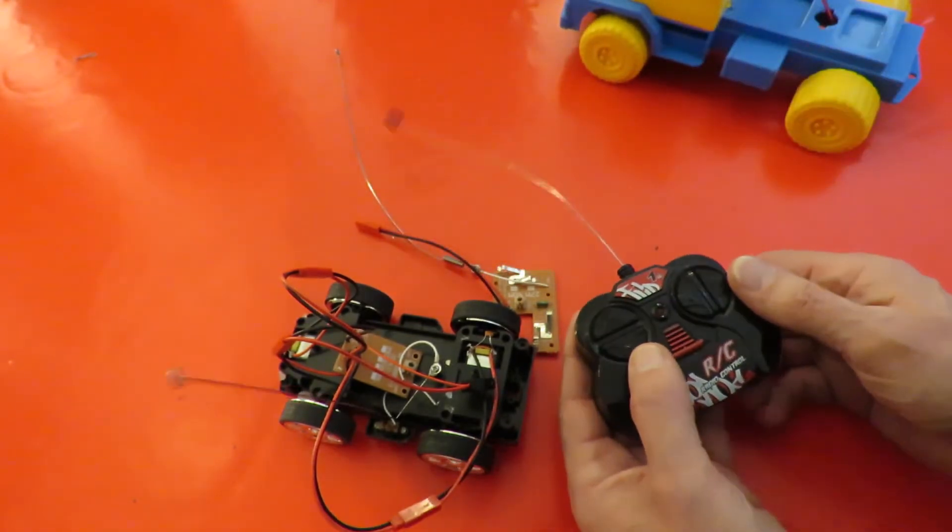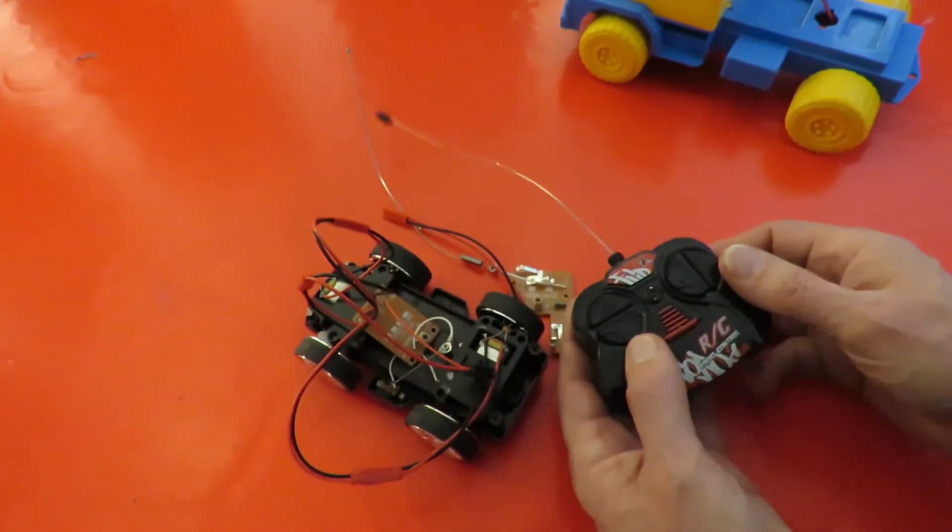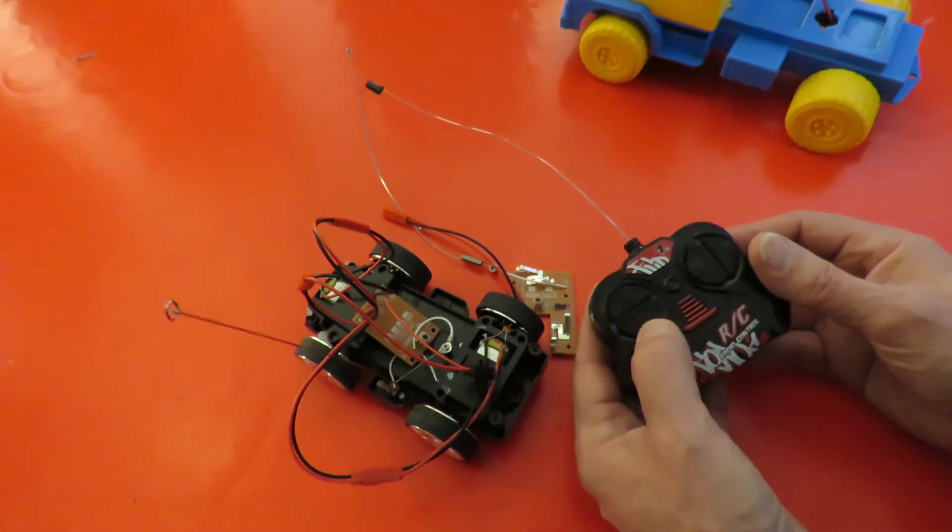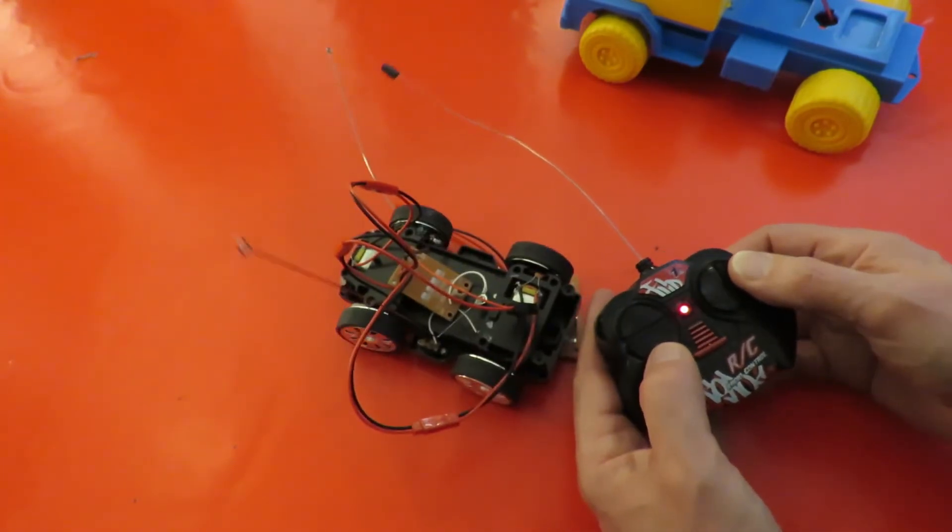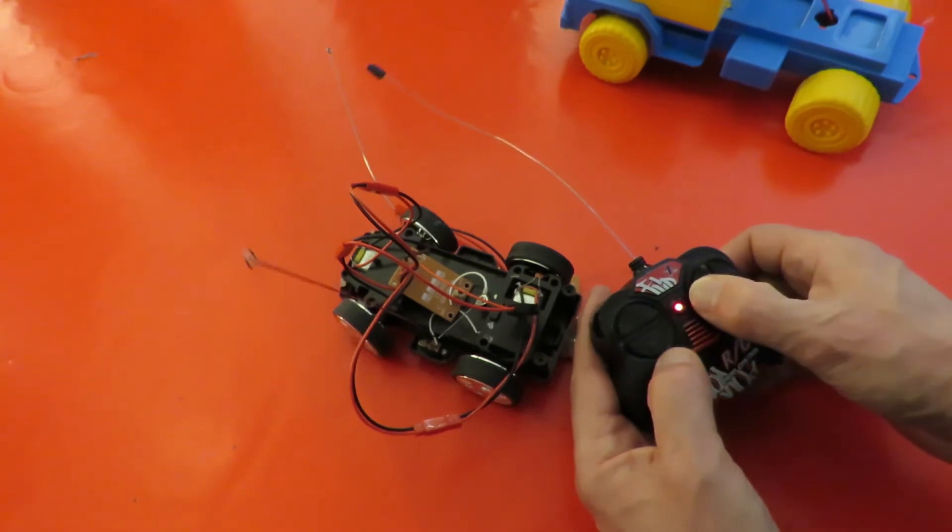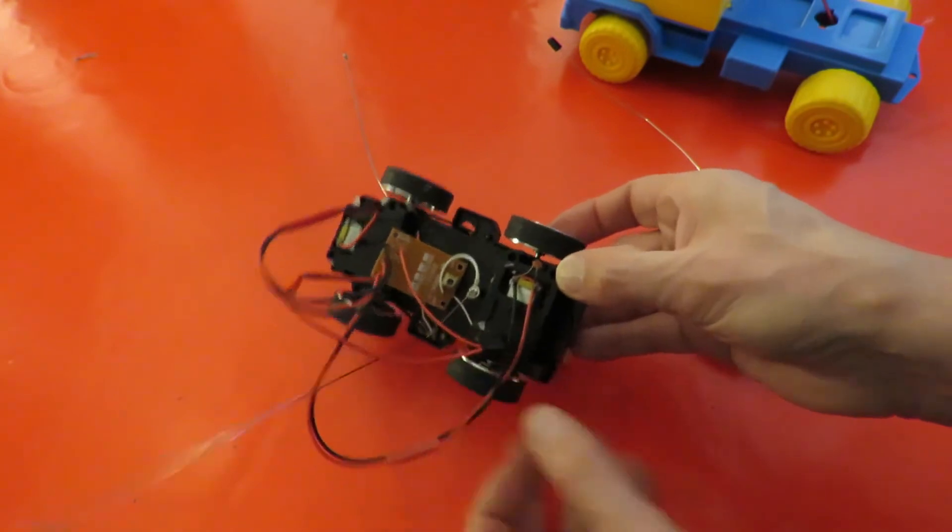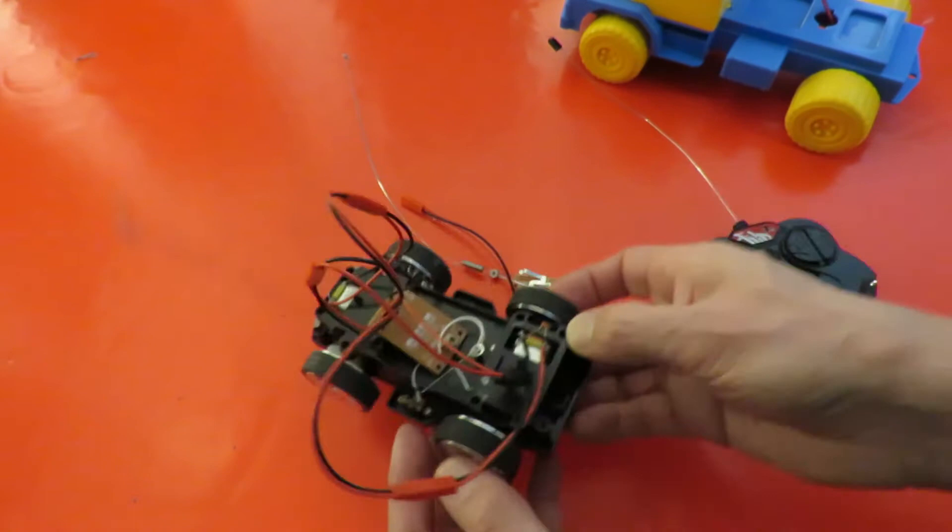The only problem is I've got it wired up exactly the reverse to the way it should be. So reverse is forwards, forwards is reverse, right is left and left is right. And that's no problem. All you would do is swap over the wires that go to the motor and that would straighten it up again.